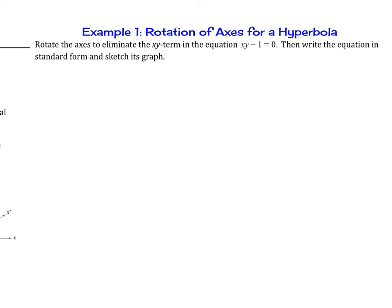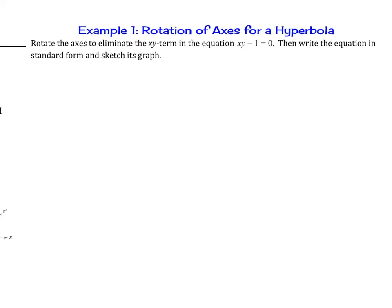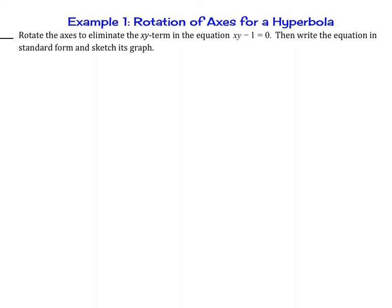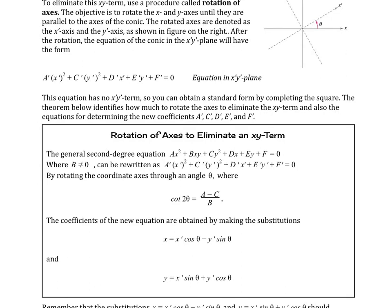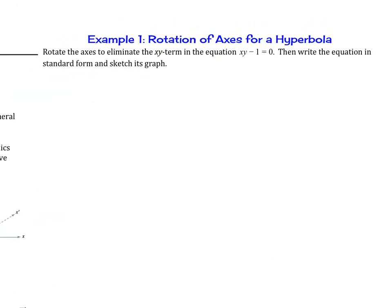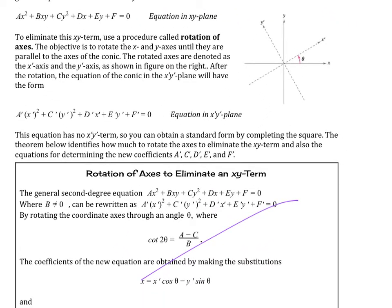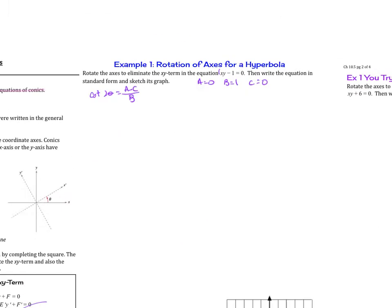Let's try the first example: Rotation of Axes for a Hyperbola. Rotate the axes to eliminate the xy term of the equation xy − 1 = 0, then write the equation in standard form and sketch its graph. First, we need to find theta using cot(2θ) = (a − c)/b. In this equation there is no x² or y² term, so a = 0, b = 1, and c = 0. Here a is the coefficient of x², b is the coefficient of xy, and c is the coefficient of y².